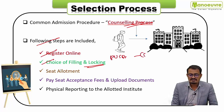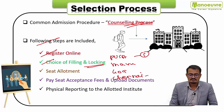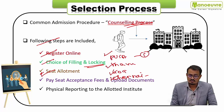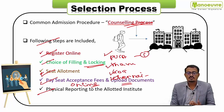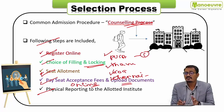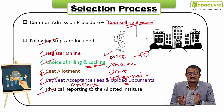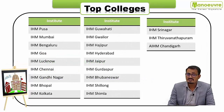After preferences are submitted, the authority releases the seat allotment. If you want to accept it, pay the seat acceptance fee and upload all documents online. Then collect the receipt and physically report to the allotted institute. For detailed info on the counseling process, you can watch the previous video on YouTube: NCHMCT selection process.